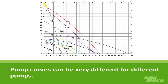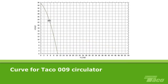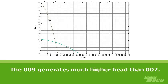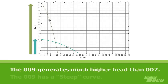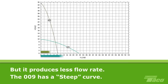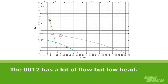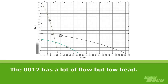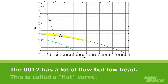As you can see on the graph, pump curves can be very different for different pumps. The Tayco 009 circulator can generate much higher head than the 007 — up to approximately 35 feet of head — but it can only produce a flow rate of just about 10 gallons per minute. We say the curve for the 009 circulator is a steep curve. The 0012, by contrast, has a very different shaped curve: it can produce a lot of flow, up to 52 GPM, but a maximum of only 14 feet of head pressure. We call this a flat pump curve.